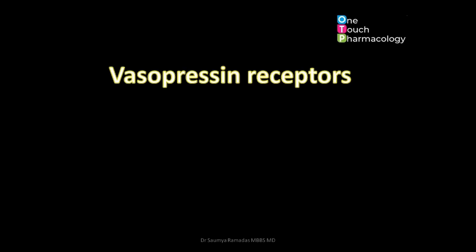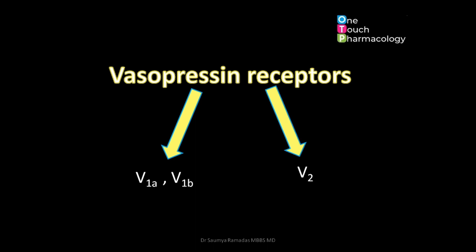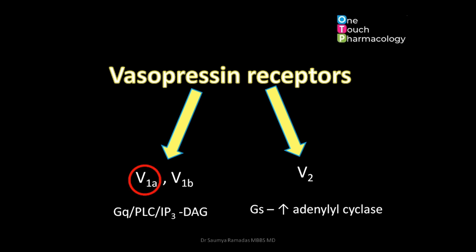Vasopressin acts on these target organs via vasopressin receptors. Vasopressin receptors are mainly V1 receptors, which are subclassified as V1a and V1b, and V2 receptors. The V1 receptors are Gq-type G protein-coupled receptors which act via the IP3/DAG pathway. The V2 receptors are Gs-type G protein-coupled receptors which act by increasing adenylyl cyclase activity.